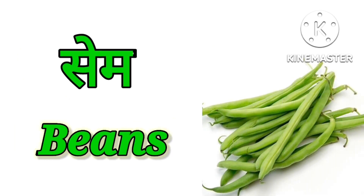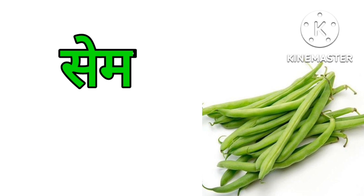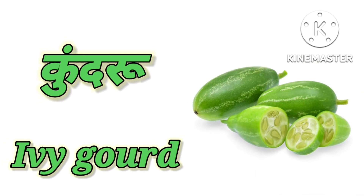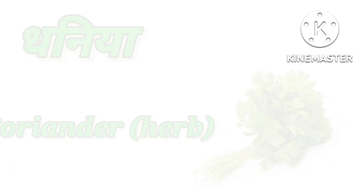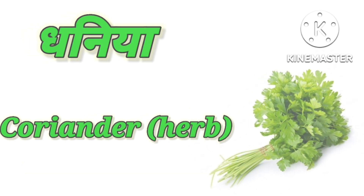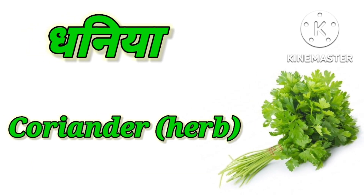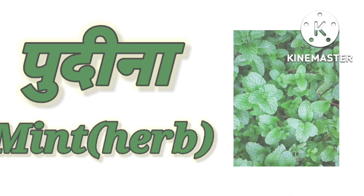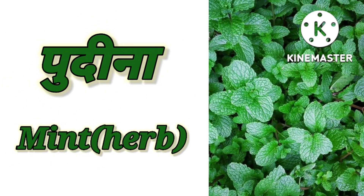Sain – Beans. Kundru – Ivy Gourd. Dhaniya – Coriander, it's a herb. Pudina – Mint, it is also a herb.